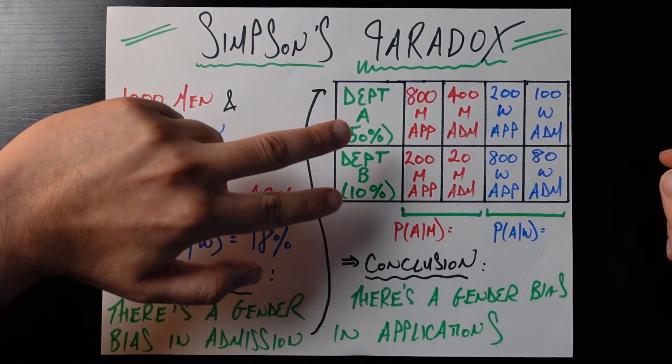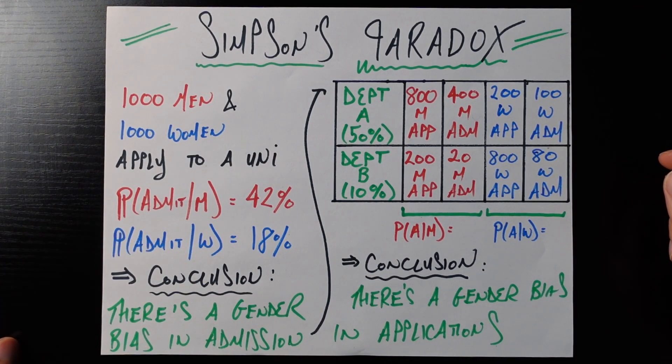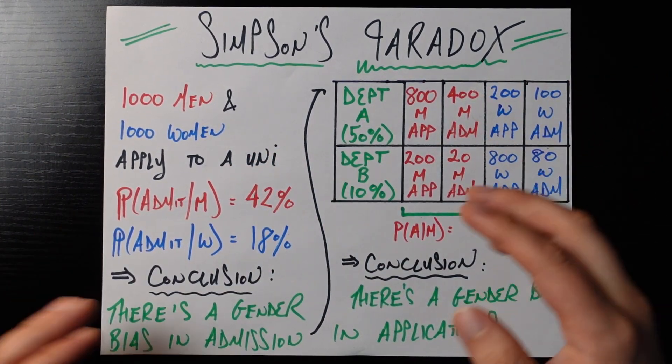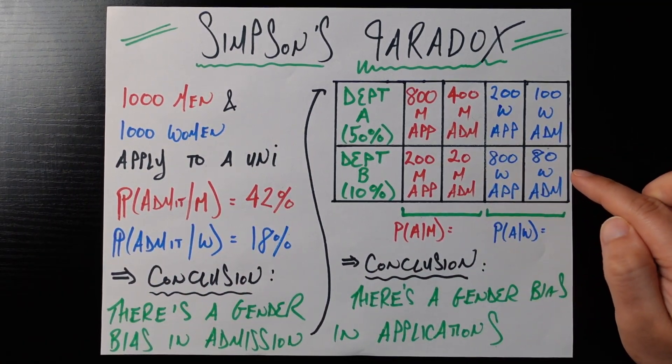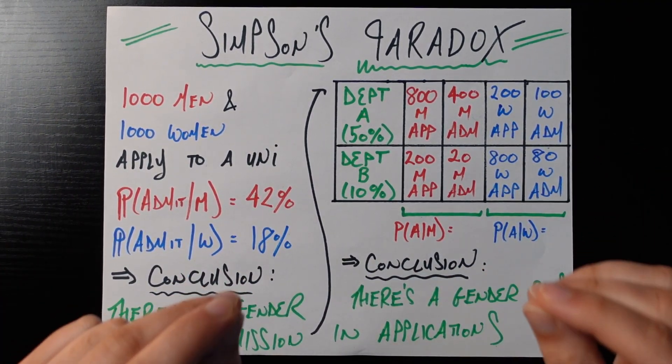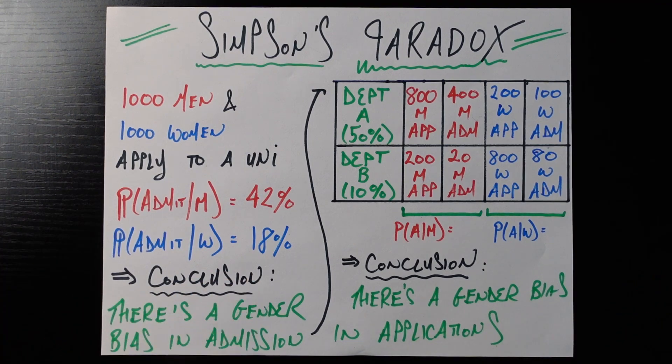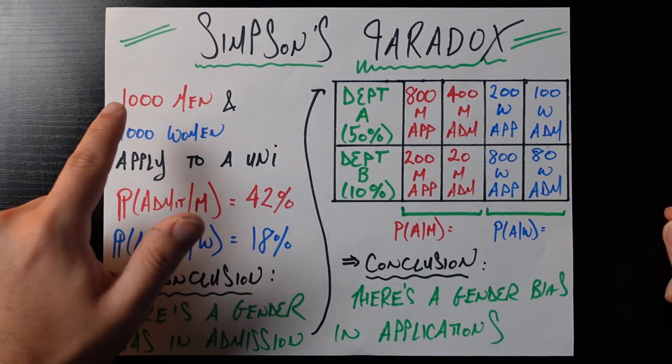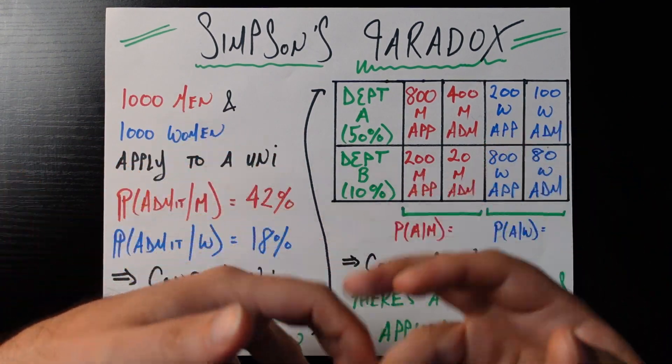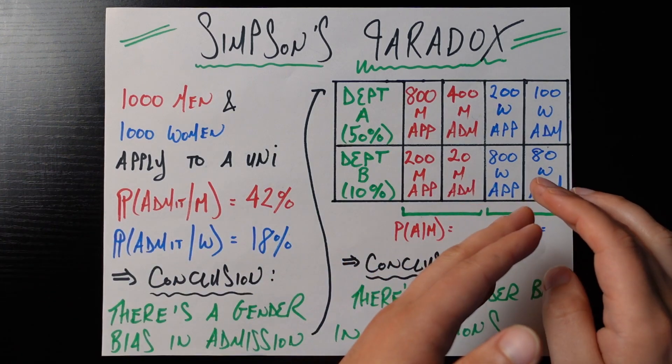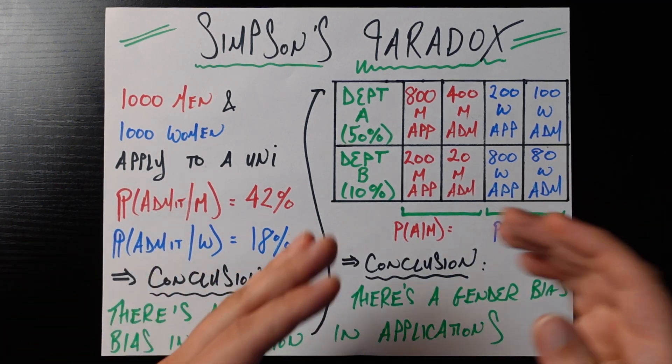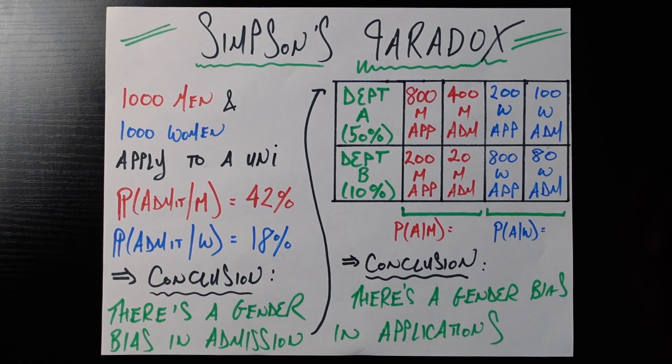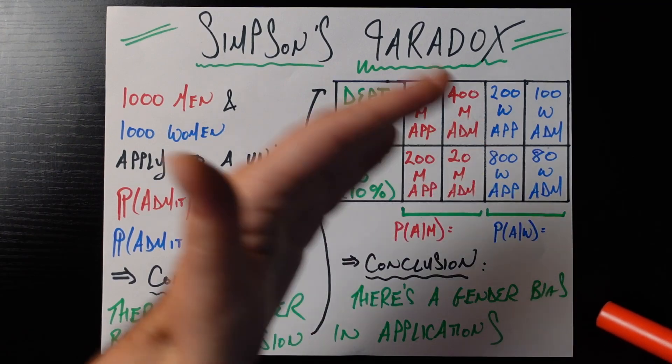So we see looking within each department, there is no bias in admissions. It accepts 50% of the men and accepts 50% of the women. And Department B accepts 10% of the men and 10% of the women. We do see where the bias is, though, is that there's a gender bias in applications. So we see that 800 of the 1,000 men applied to the department that's more likely to select anybody. And 800 of the 1,000 women applied to the department which is just less likely to accept anybody, more highly selective. And so we see looking at these aggregate stats, we get the same stats as before.